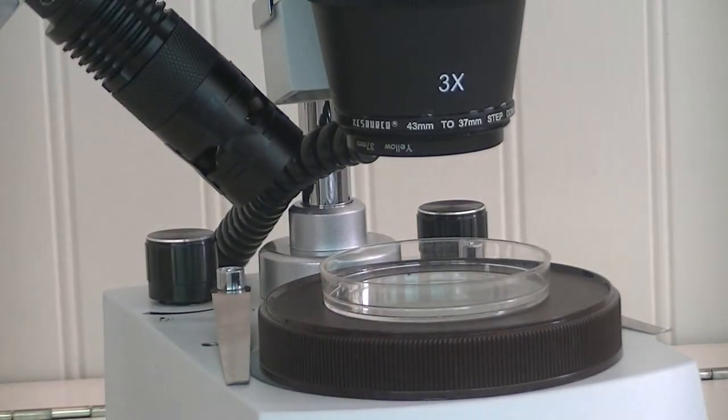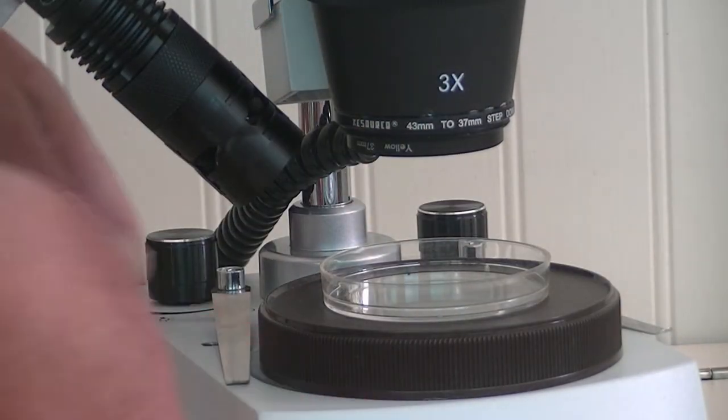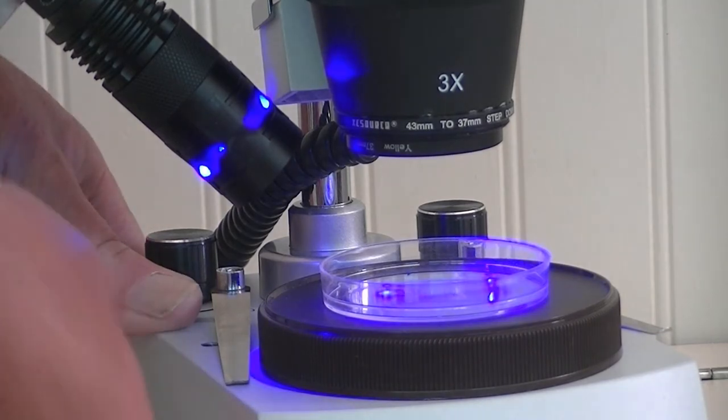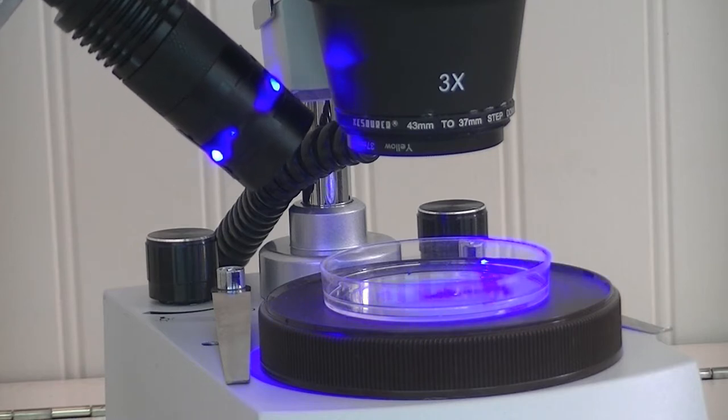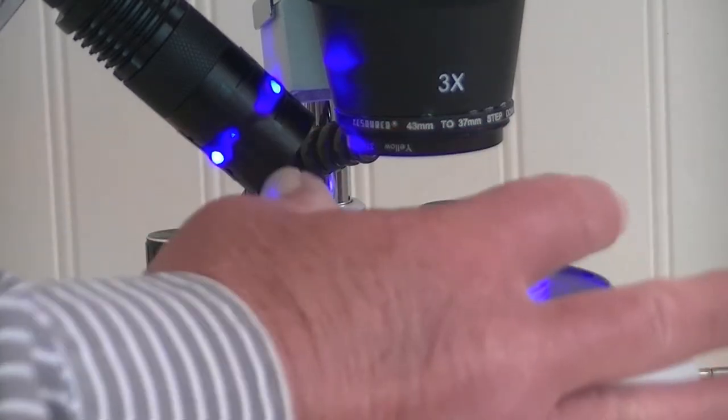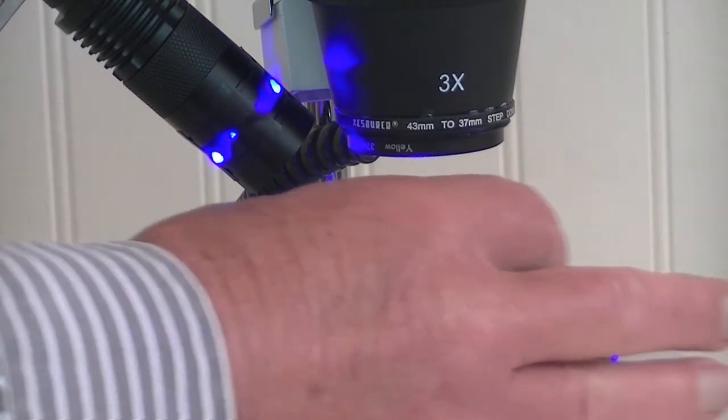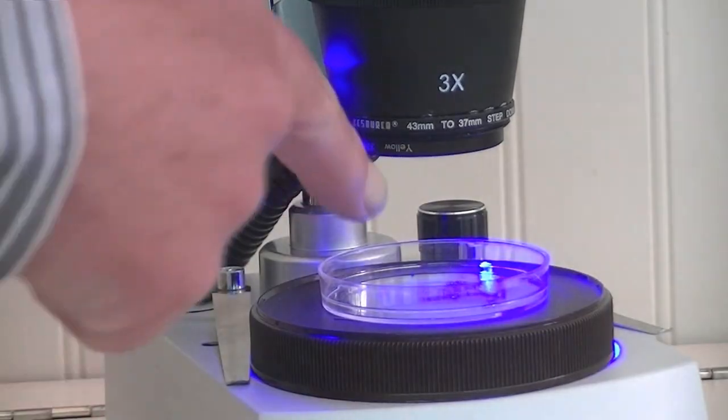For our fluorescence we switch on the light source like that, and now this is focused to give us a bright spot which we then line up with our sample. Now we can move the petri dish around, examine all the contents, and the spot will just light up the few millimeters under observation.